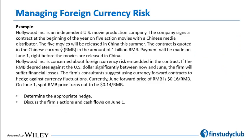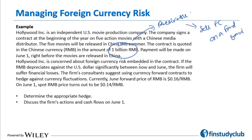Second example involving receivables denominated in foreign currency: Hollywood Inc. is an independent U.S. movie production company. The company signs a contract at the beginning of the year for five action movies with a Chinese media distributor. The movies will be released in China this summer. The contract is quoted in Chinese RMB in the amount of 1 billion RMB. Payment would be made on June 1st. This is a receivable denominated in foreign currency, so Hollywood should sell foreign currency on a forward basis.